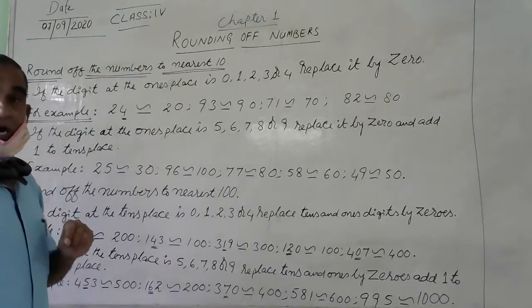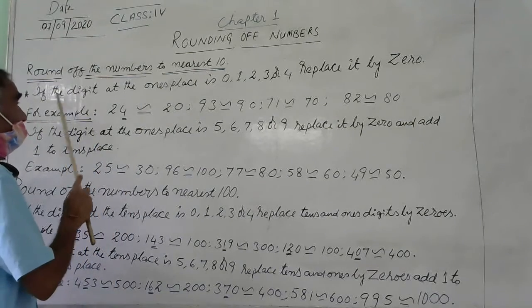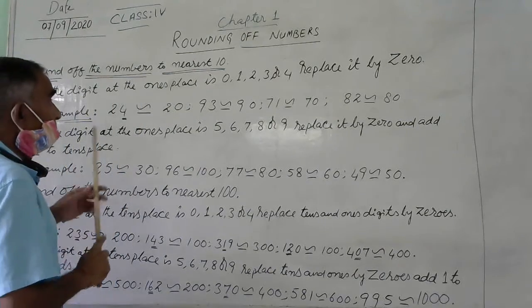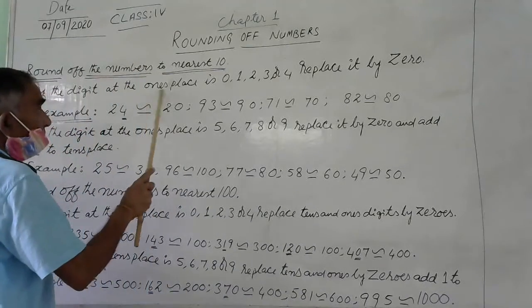We have to see the 10th place digit, we have to see the 10th place. In the digit at the one's place, is the digit at the one's place.